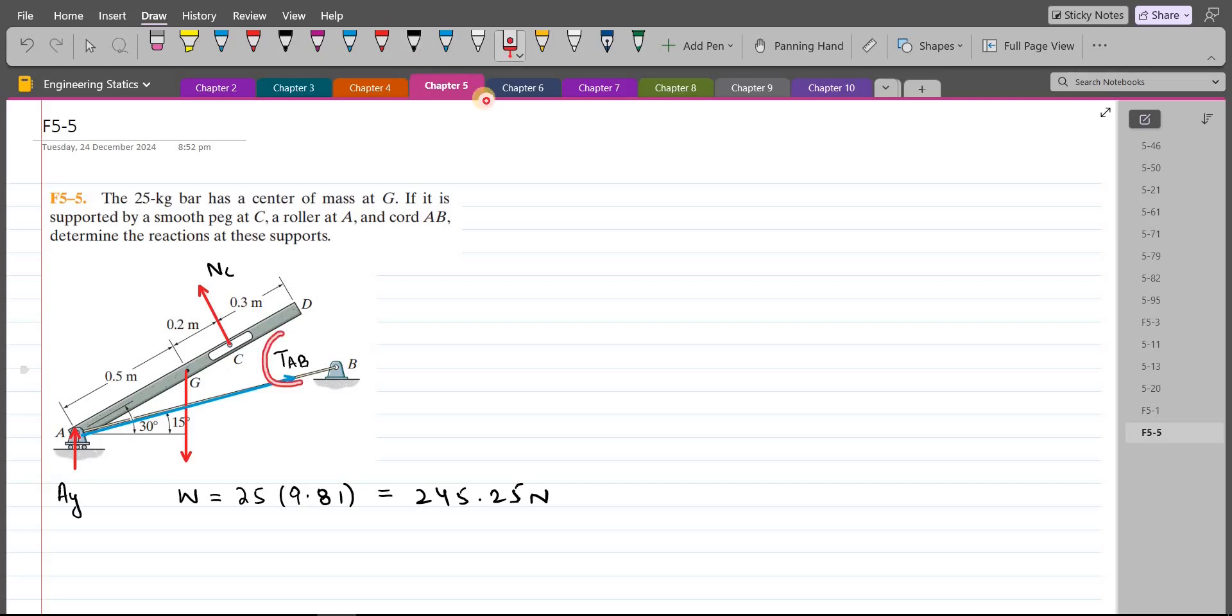Now I can resolve the TAB force and the NC force into their respective components along the horizontal and vertical axis. But I am not going to do it now until I find the NC force, because in this condition, it is much easier to find the support reaction at the peg C. How? Let's see.